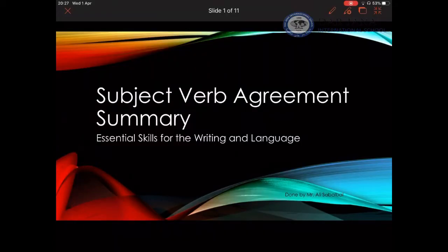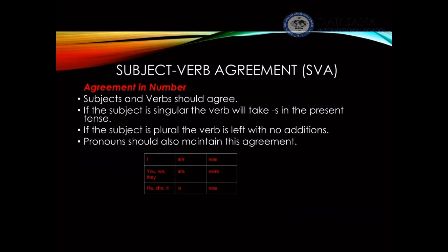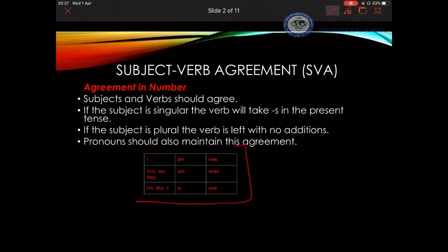Hello once again. Here we are discussing the summary for subject-verb agreement, which is part of our essential skills for writing and grammar. First, we have to start with the idea that subject and its verb should agree in number. The verb has to agree with the subject — whether the subject is singular, the verb takes an S; if the subject is plural, the verb should not take an S. I need to draw your attention to the table below, which summarizes the pronouns and the verbs they agree with, whether in the present or in the past.